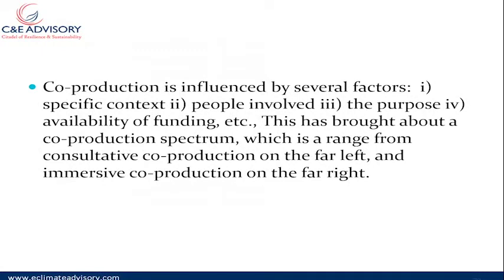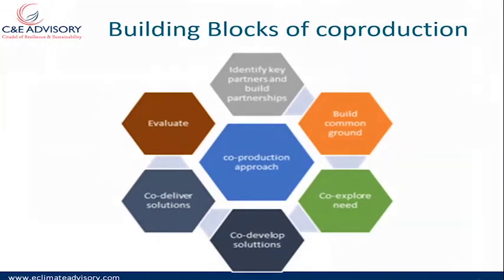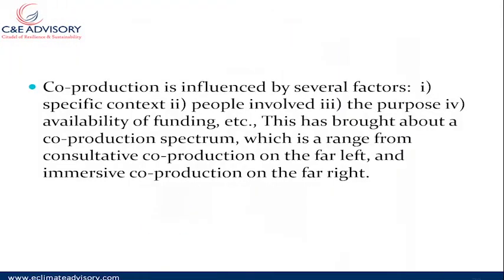Co-production is normally influenced by several factors: the specific context, the people who are involved, and the purpose and availability of funding. This has brought about the co-production spectrum, which is arranged from consultative co-production on the far left and mass co-production on the far right. It's a continuum — on the far left we have consultative approaches, and on the far right is mass co-production where we have grid-level working.